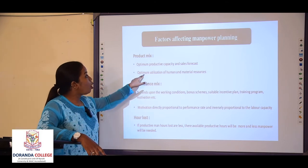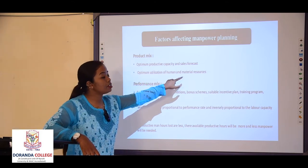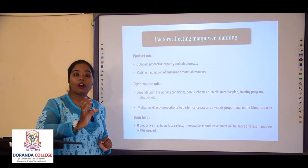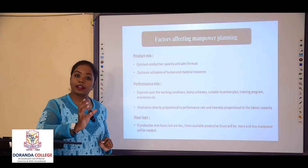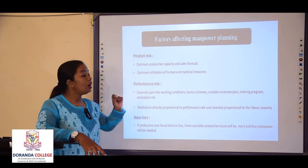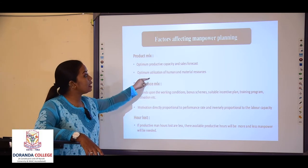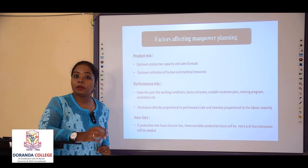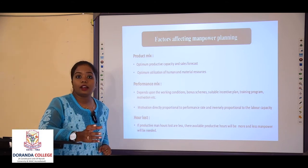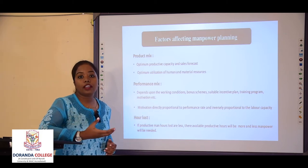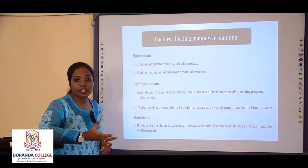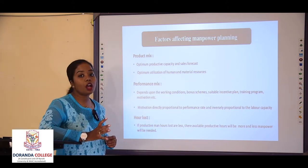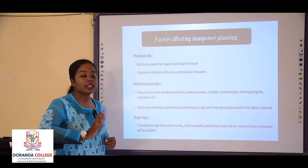Then comes optimum utilization of human and material resources. The employees you have hired — the right people, right number at the right place — their job is to properly utilize all materials and resources being used: money, material, and machines, in order to give proper production. If the right people are there, they will utilize resources to the optimum level and there will not be any wastage.